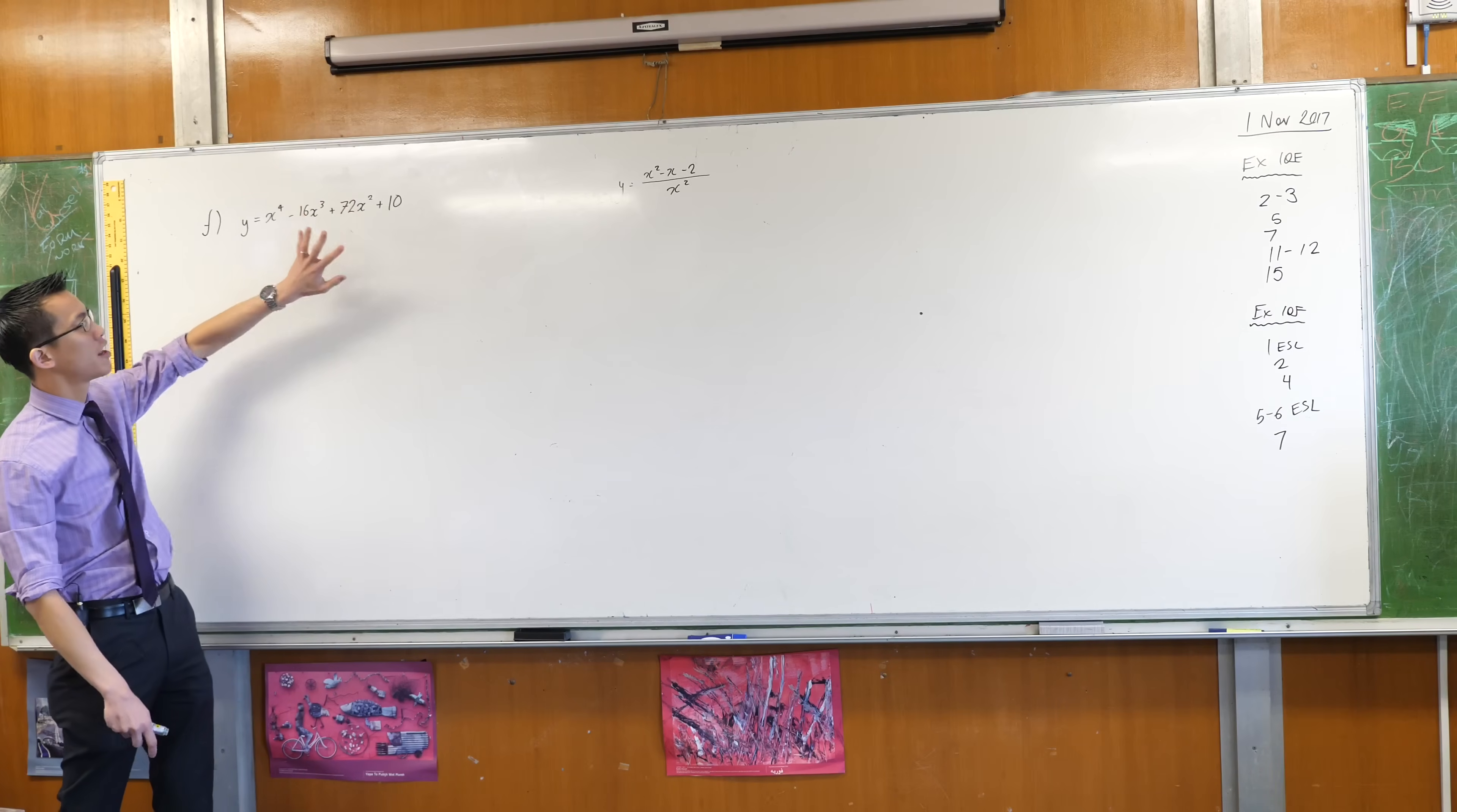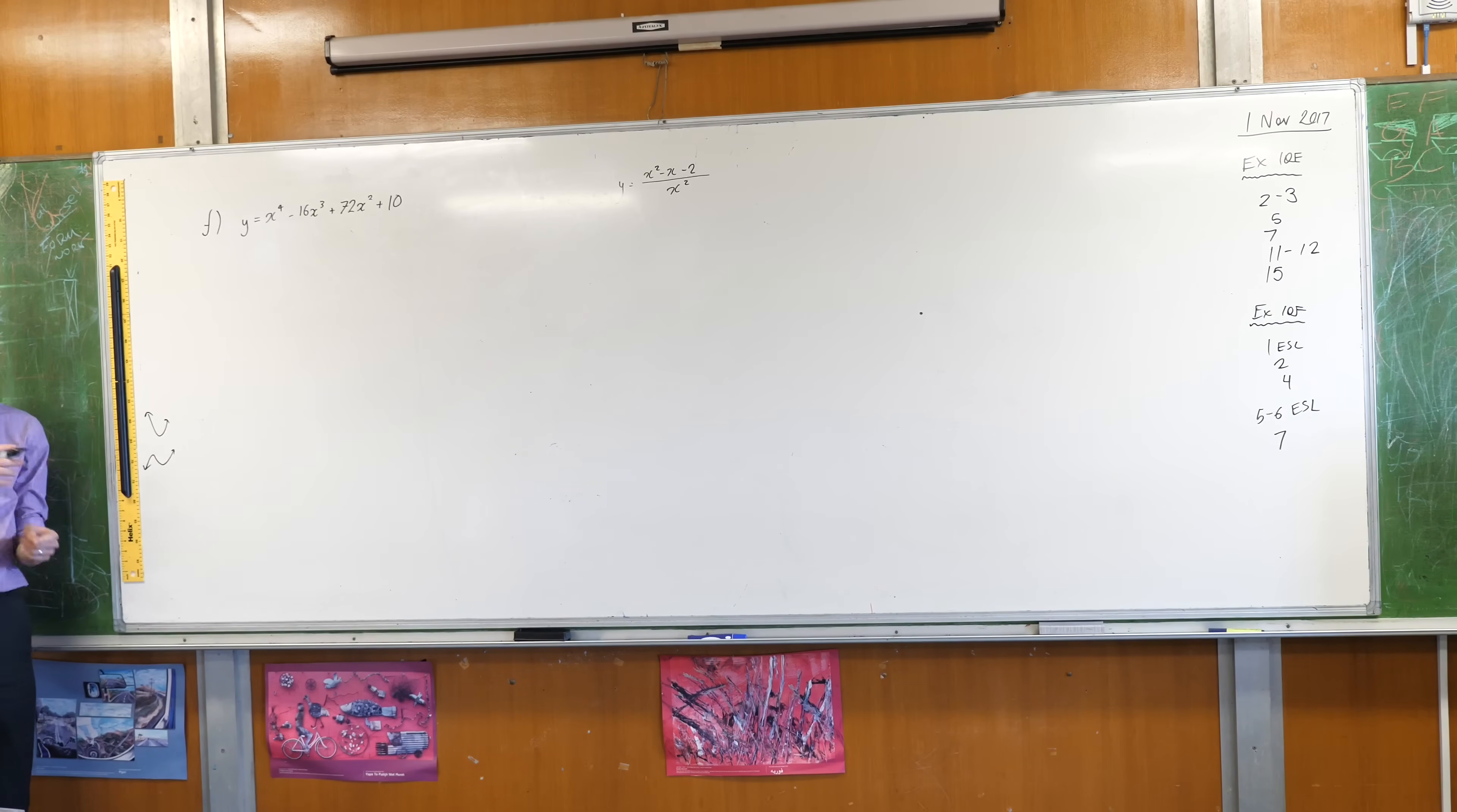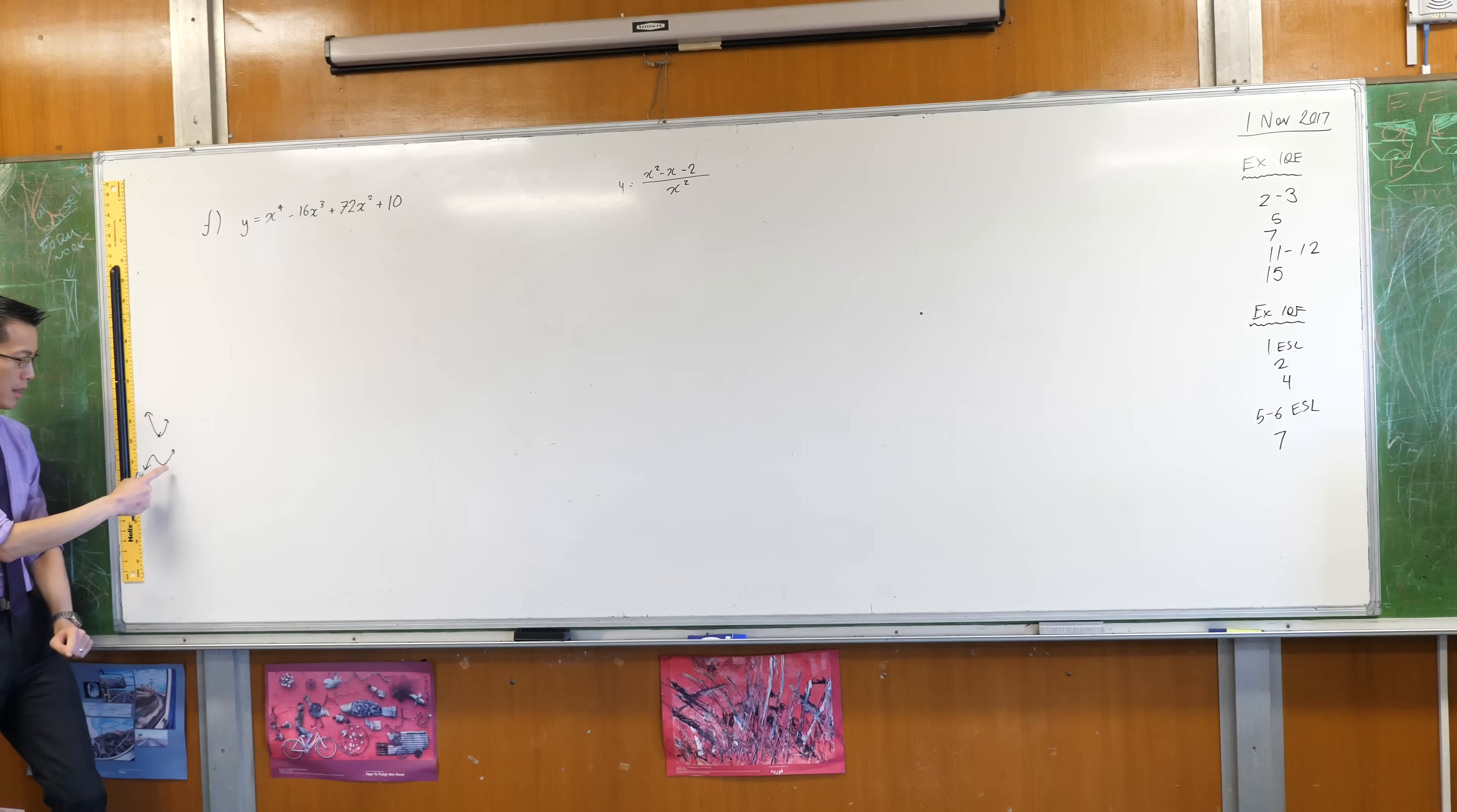So the first thing to notice is this is going to be a quartic curve. We know a parabola looks something like that, a cubic looks something like that. You can see a parabola has a power of 2 which gives it one stationary point because if it has a power of 2 its derivative has a power of 1.